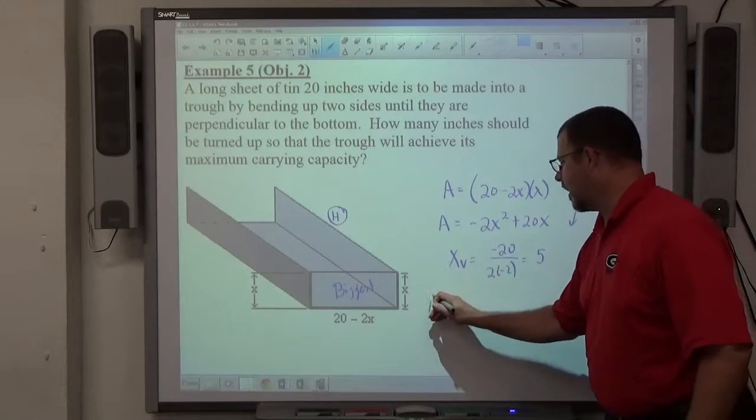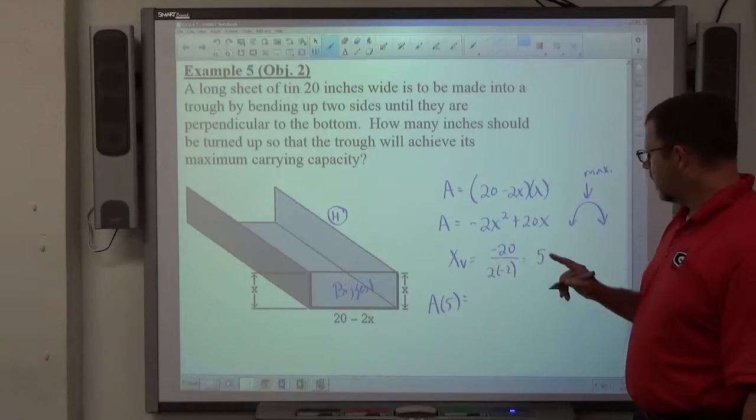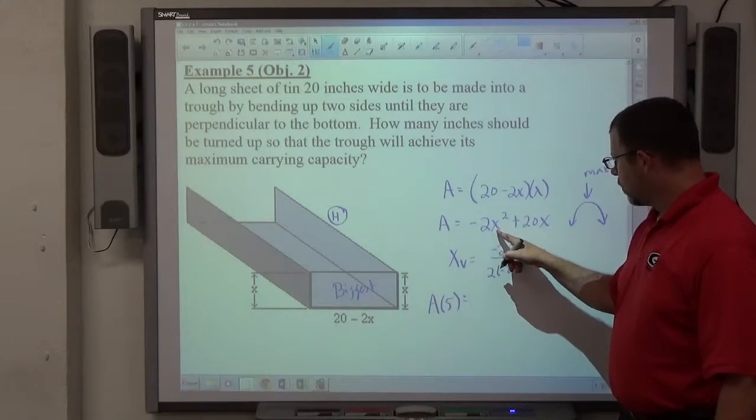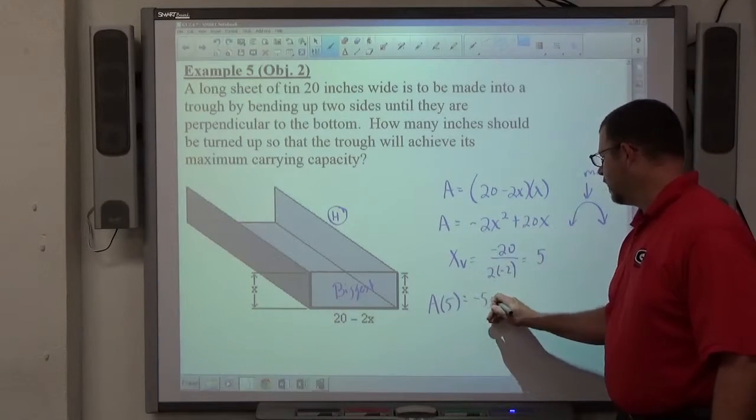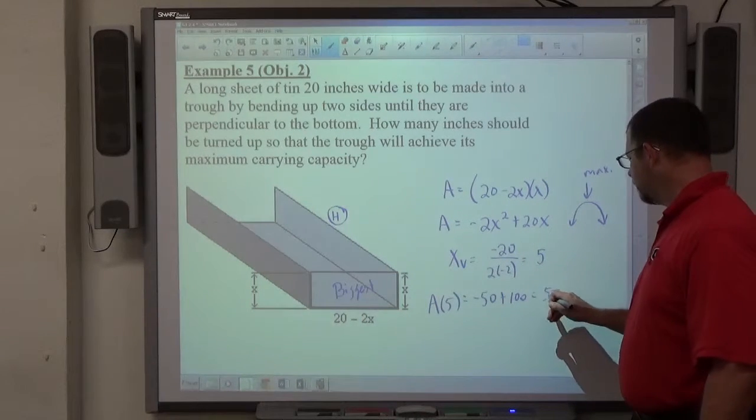And then I simply have to evaluate A of 5. And that gives me 25 times negative 2 is negative 50. 20 times 5 is 100. Maximum area is 50.